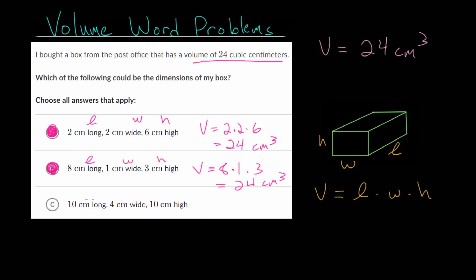And for this one, this is our length, our width, and our height. So we multiply those together. We get 10 times 4 times 10, and 10 times 10 is 100 times 4. This would be 400 cubic centimeters. So this box would be considerably bigger than what we need. So choice C would not be correct here.